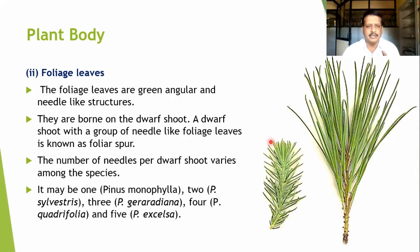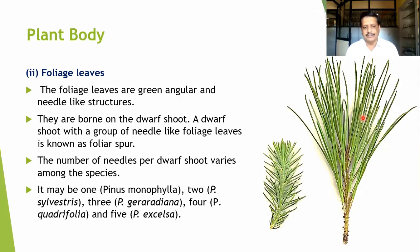The function of scaly leaves is to protect the young buds of the foliage leaves. The scaly leaves on the dwarf shoots have a distinct midrib and are called cataphylls. Foliage leaves are green, angular, and needle-like structures, born on the dwarf shoots. A dwarf shoot with a group of needle-like foliage leaves is known as a foliar spur. The number of needles per dwarf shoot varies among species: one in Pinus monophylla, two in Pinus sylvestris, three in Pinus gerardiana, four in Pinus quadrifolia, and five in Pinus excelsa.